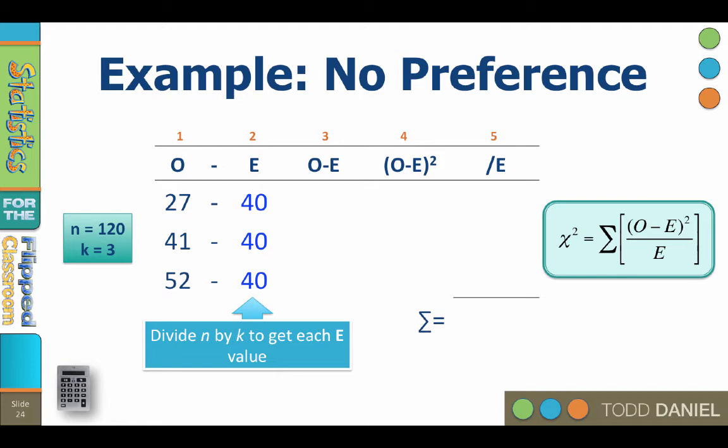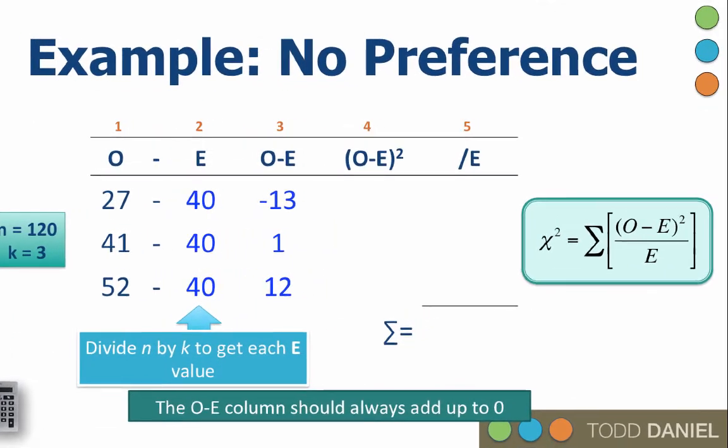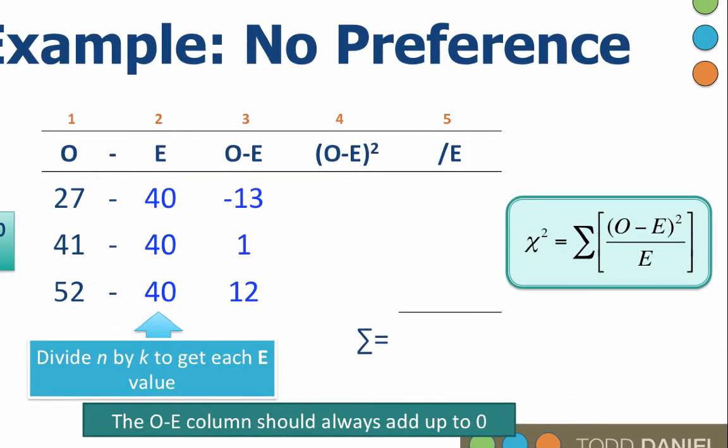Now obviously these observed values differ from the expected values, but do they differ statistically significantly? To find out, we will subtract each expected value from its respective observed value, and that gives us column three. Now this is a good time to do a data check. The O minus E column should always add up to zero. Now this makes sense because the O values add up to n, total sample size, and the E values also add up to n. So we are subtracting n minus n, the total should be zero.